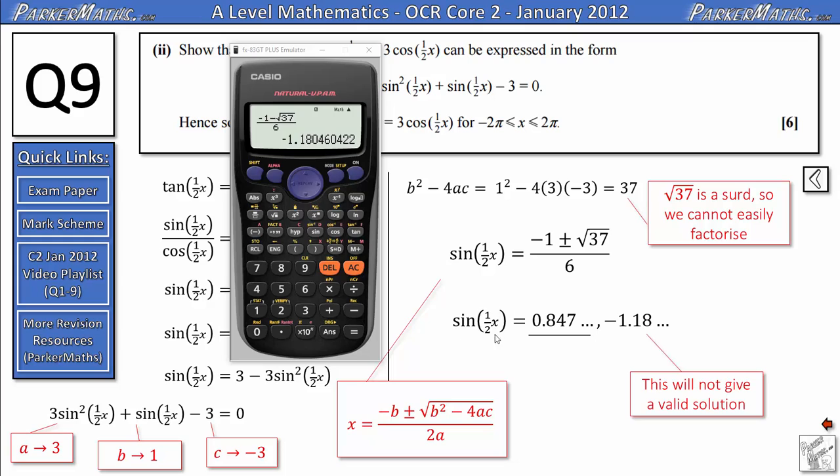But remember, we're solving for sin(x/2) here, and if we plotted the graph of sin(x/2), you'd notice it only goes between 1 and -1. So this -1.18 will not give us a solution when we do the next part, so we can ignore that and focus on the 0.847.